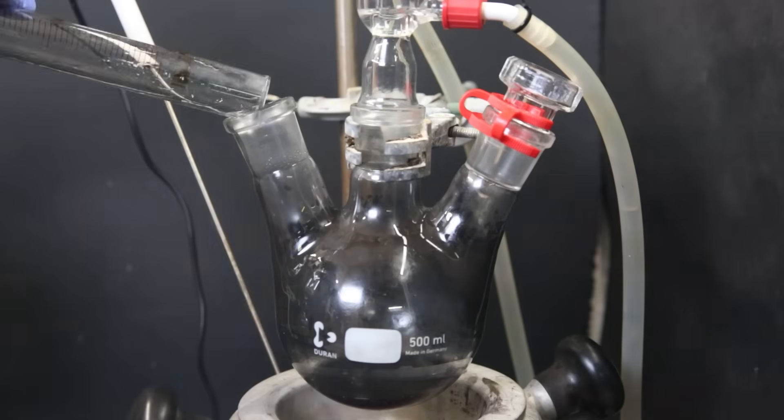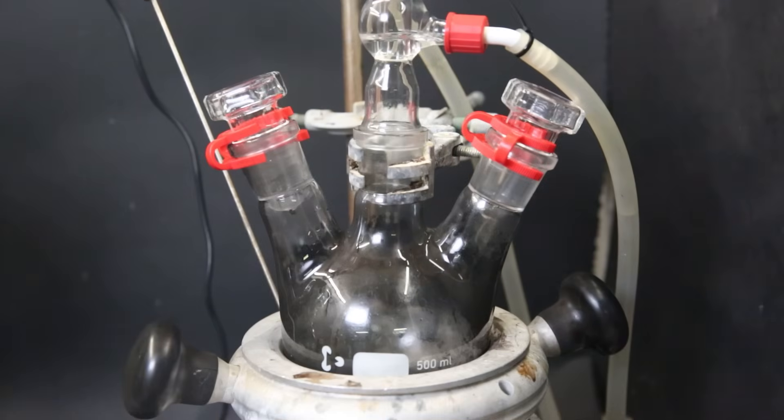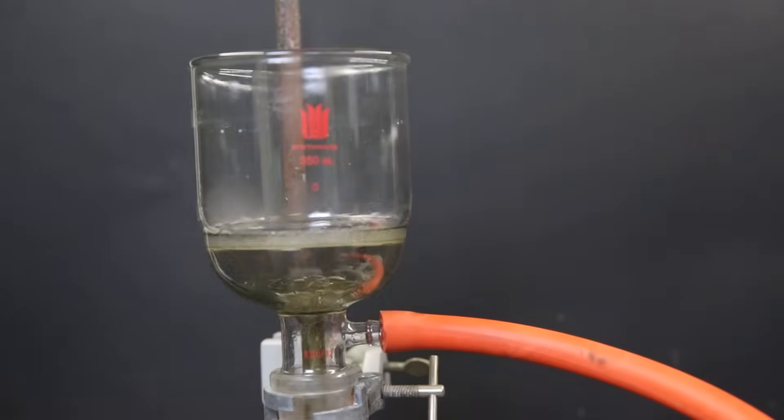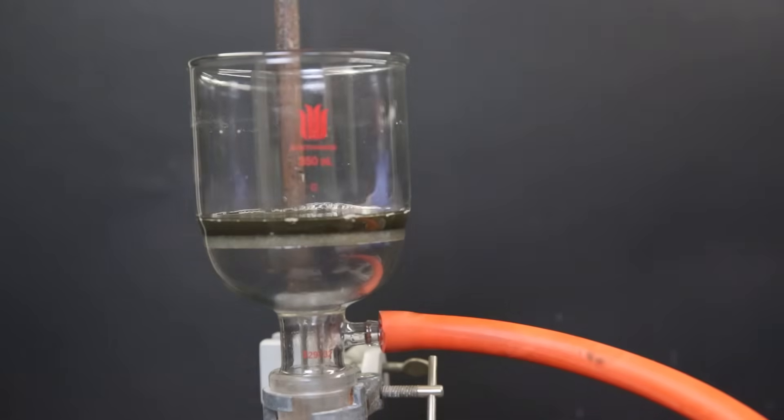To do that, I add more pyridine to the flask and then boil it for 10 minutes. After that, I filter the mixture again and repeat the pyridine extraction two more times.